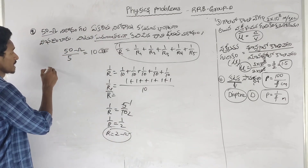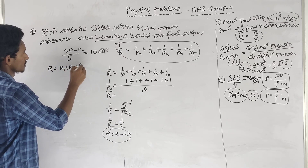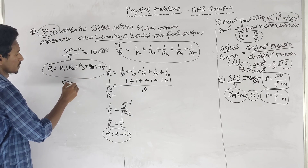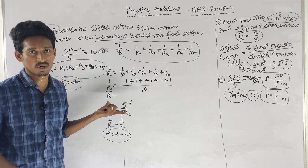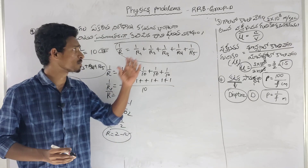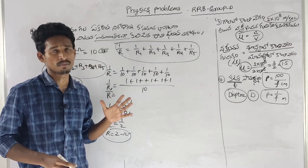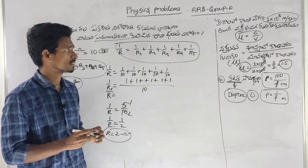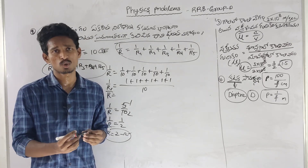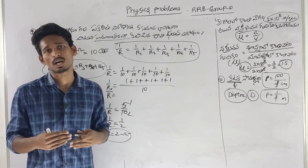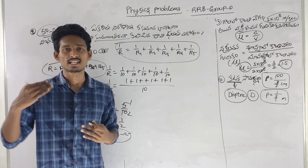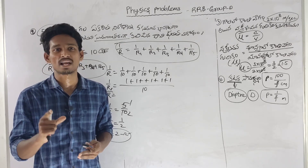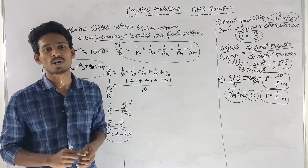For the series connection, R is equal to R1 plus R2 plus R3 plus R4 plus R5. We are going to get 10 plus 10 plus 10 plus 10 plus 10, which gives 50 ohms. In this video, we will get physics examples for the RRB group. This is my second video and there is also a link in this video. Subscribe to our ADEXAM VARISH YouTube channel. If you click the bell icon, you will get more updates. Thank you.